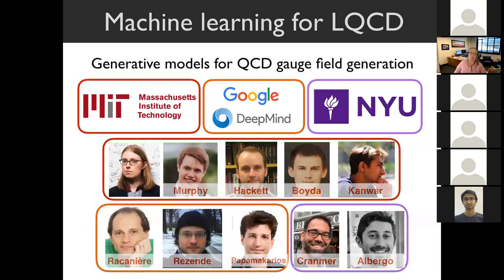This work is done by a group of very talented people—a collaboration between my group at MIT, a team at Google DeepMind, and NYU. I want to point out in particular Tej Kanwa, one of the senior graduate students who has been leading a lot of this work and is answering questions live in the chat.